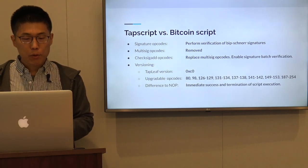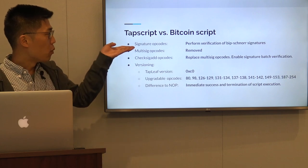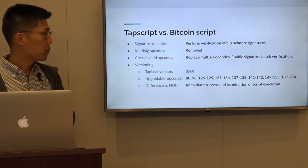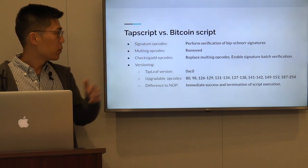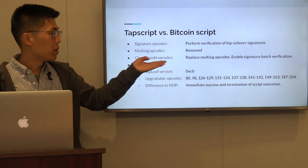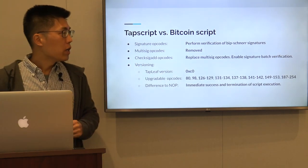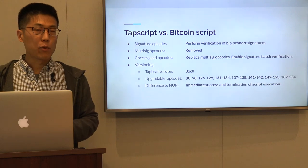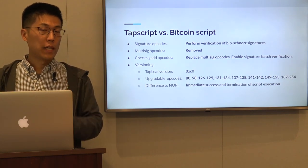Looking at the differences between tapscript and legacy Bitcoin script: first, the signature opcodes now verify schnorr signatures per BIP Schnorr. The multisig opcodes have been removed and replaced with check sig add opcodes. Check sig add opcodes allow signature batch verification for schnorr because they require a witness argument for every public key in the output.